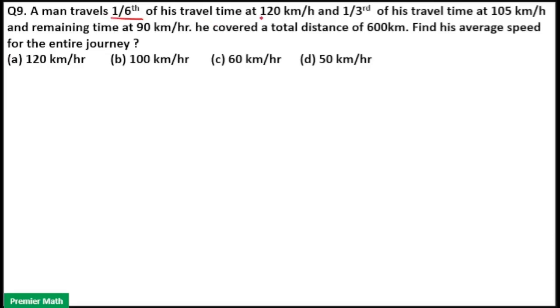A man travels 1/6th of his travel time at 120 km per hour and 1/3rd of his travel time at 105 km per hour. Remaining time at 90 km per hour. He covered a total distance of 600 km. Find his average speed for the entire journey.